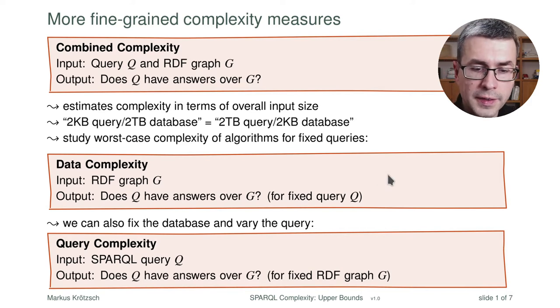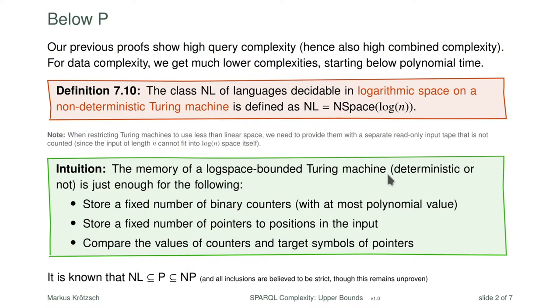So we would like to analyze data complexity, and what we expect in these cases is that complexity is much lower than before. In fact it will turn out that it is below P — below P time. There are quite a few classes below P. The one we will need here is the class NL. NL is the class of languages that are decidable in logarithmic space by a non-deterministic algorithm. Logarithmic space is really very little space — the logarithm is sublinear, growing slower than a linear function, which means the input you process is actually larger than the memory available.